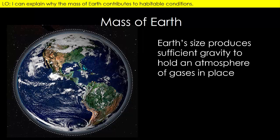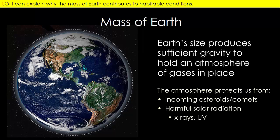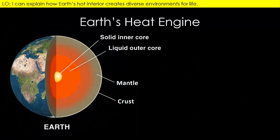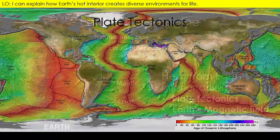Condition number four is about Earth's mass. The presence of an atmosphere is essential to protecting life, and Earth is large enough to generate sufficient gravity to hold a blanket of gases close to its surface. While the atmosphere is thin compared to the size of the planet, it is thick enough to block harmful solar radiation and cause most incoming asteroids and comets to burn up before reaching the planet's surface. Internally, Earth can be divided into three compositional layers: the crust, mantle, and core. Earth's deep hot interior is over 6,000 degrees Celsius, and this internal heat is responsible for the next two conditions — plate tectonics and a strong magnetic field.